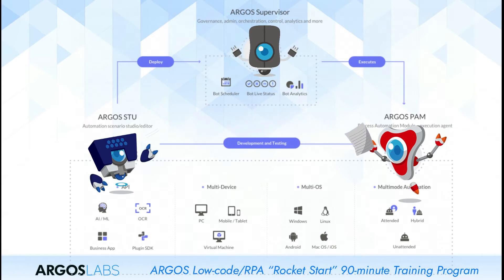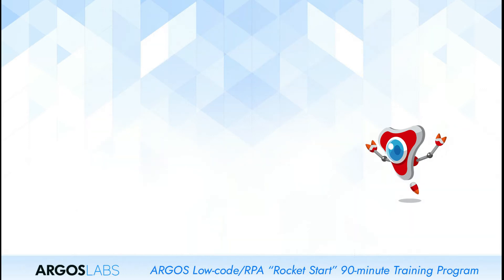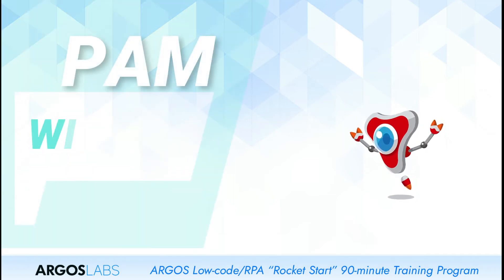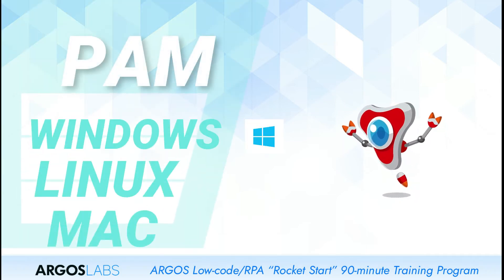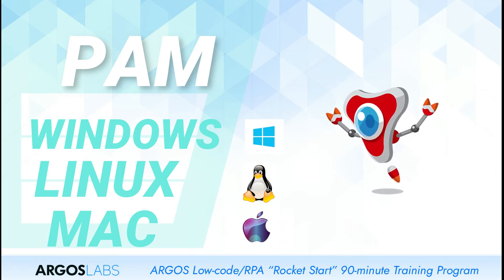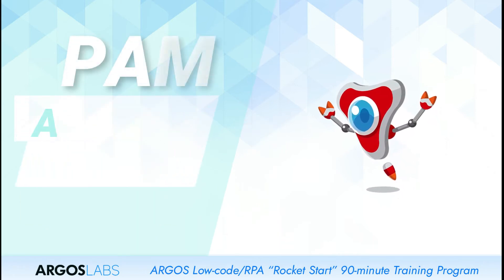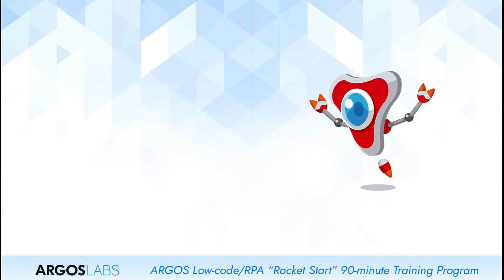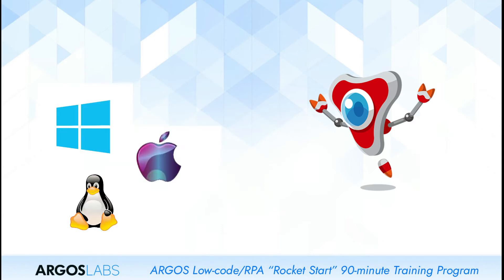Pam is the runtime software. One of the unique characteristics of Argos Pam is that Pam comes in five different flavors. Pam runs on Windows, she also runs on Linux and Mac OS. Pam is also compatible with mobile operating systems like Android and iOS. Argos platform is one of the unique RPA platforms in the world, where you can automate not only Windows, but all these five operating systems.